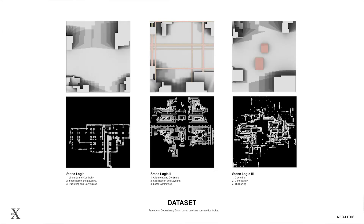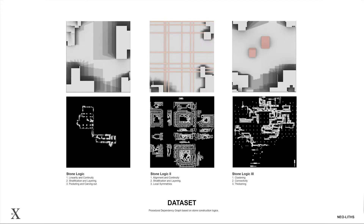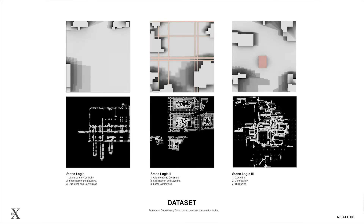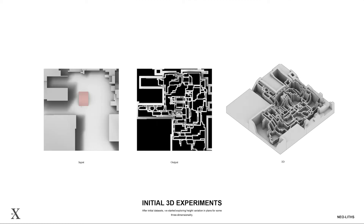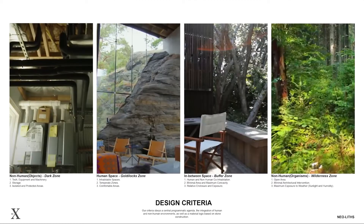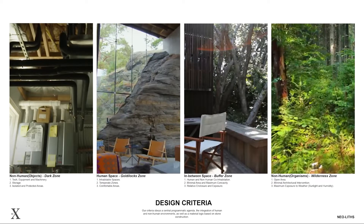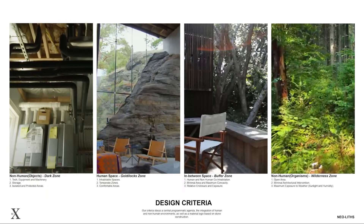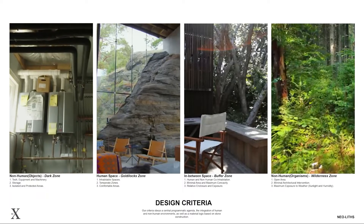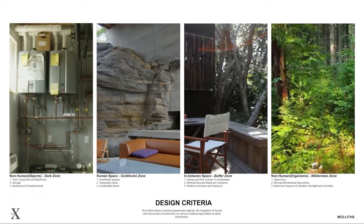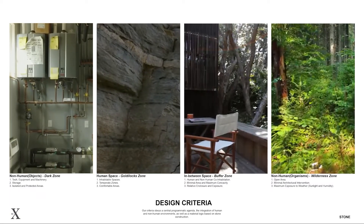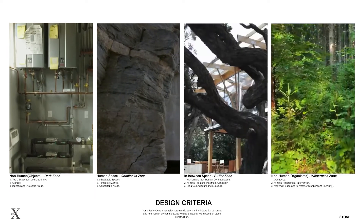In our initial datasets, we generated layouts with different zones of density that indicate moments of structural and spatial redundancy following the material logic. Based on these results, we developed a design criteria that would influence our computational logics by incorporating four zones: a dark zone for tech, a Goldilocks zone for human inhabitation, an in-between zone that integrates both human and non-humans, and a wilderness zone.